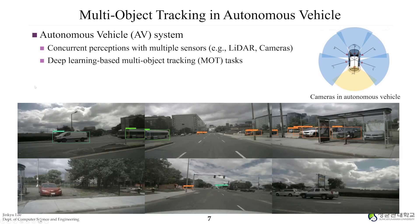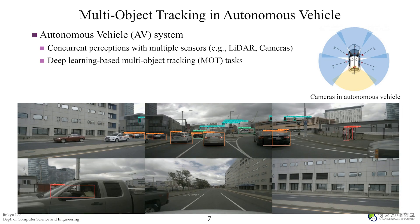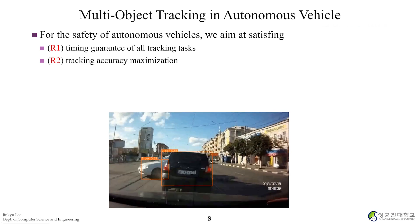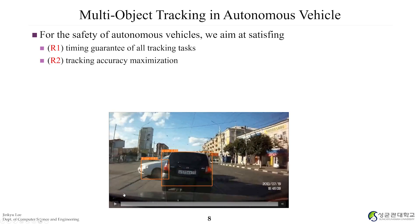This slide is the motivation of the paper itself, similar to the previous background. We are talking about autonomous vehicles, concurrent perception with multiple sensors, and deep learning-based multi-object tracking tasks. For the safety of autonomous vehicles, we aim at satisfying timing guarantees of all tracking tasks. If object tracking or detection is not finished within a predefined threshold, it is very dangerous — the autonomous driving car cannot stop even if there is a car in front.